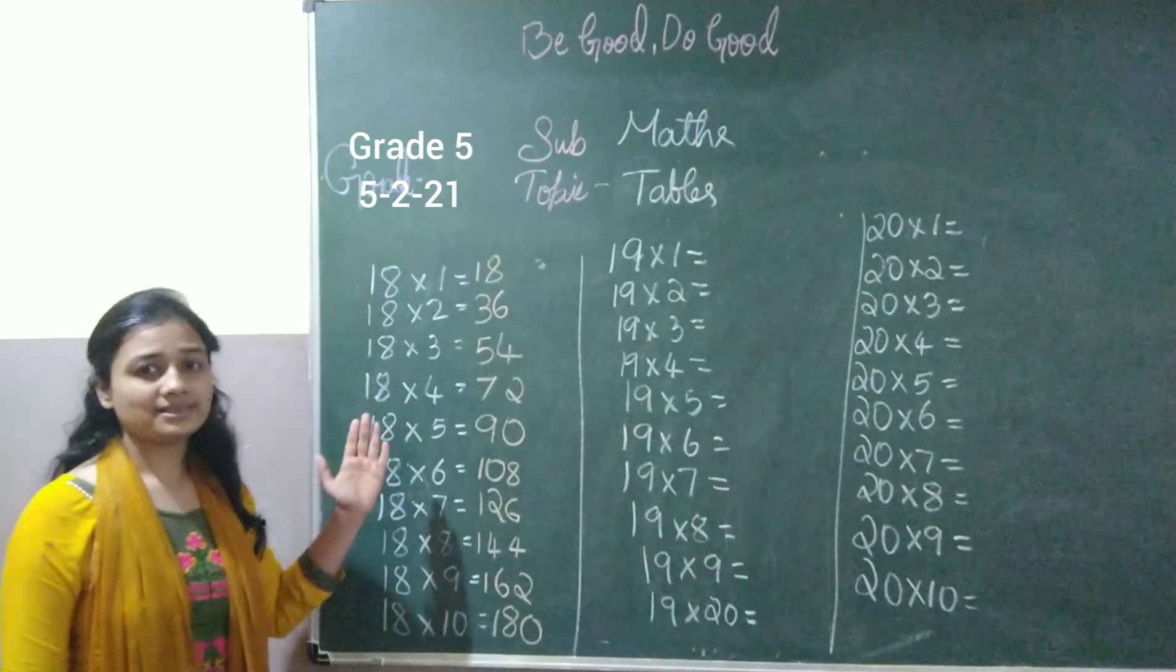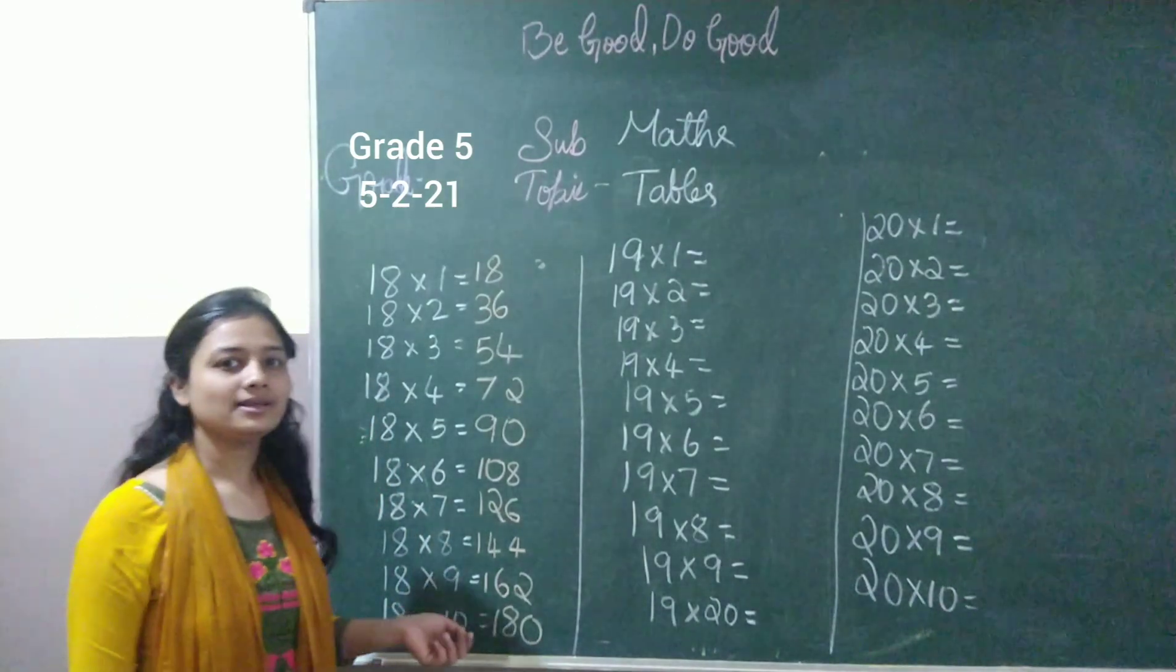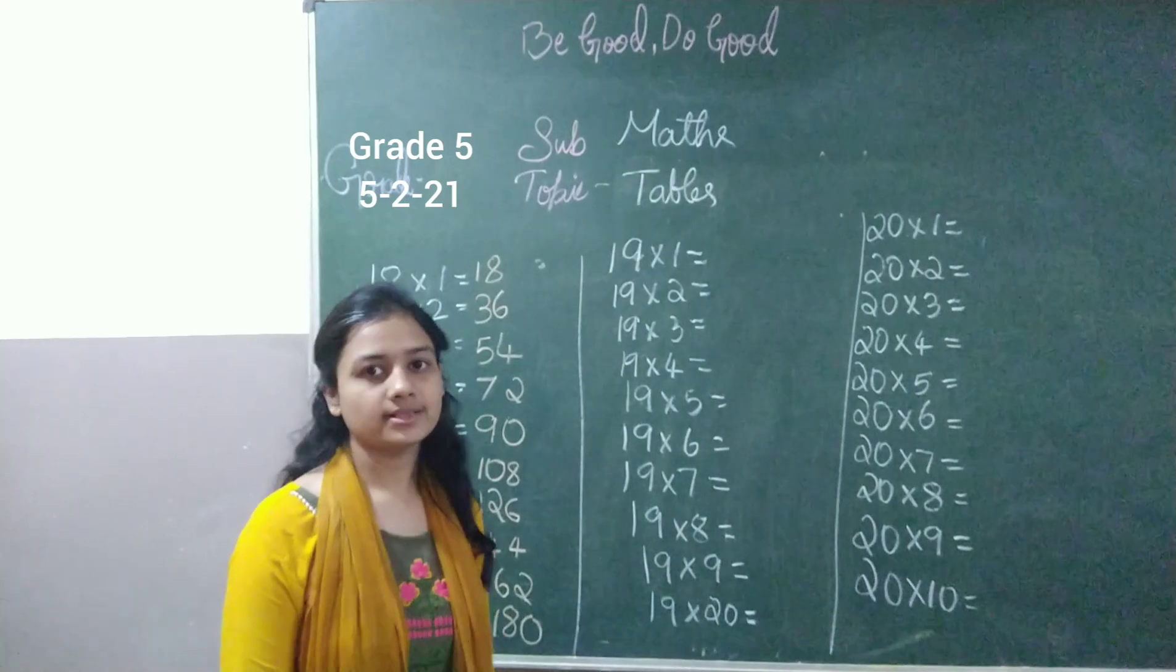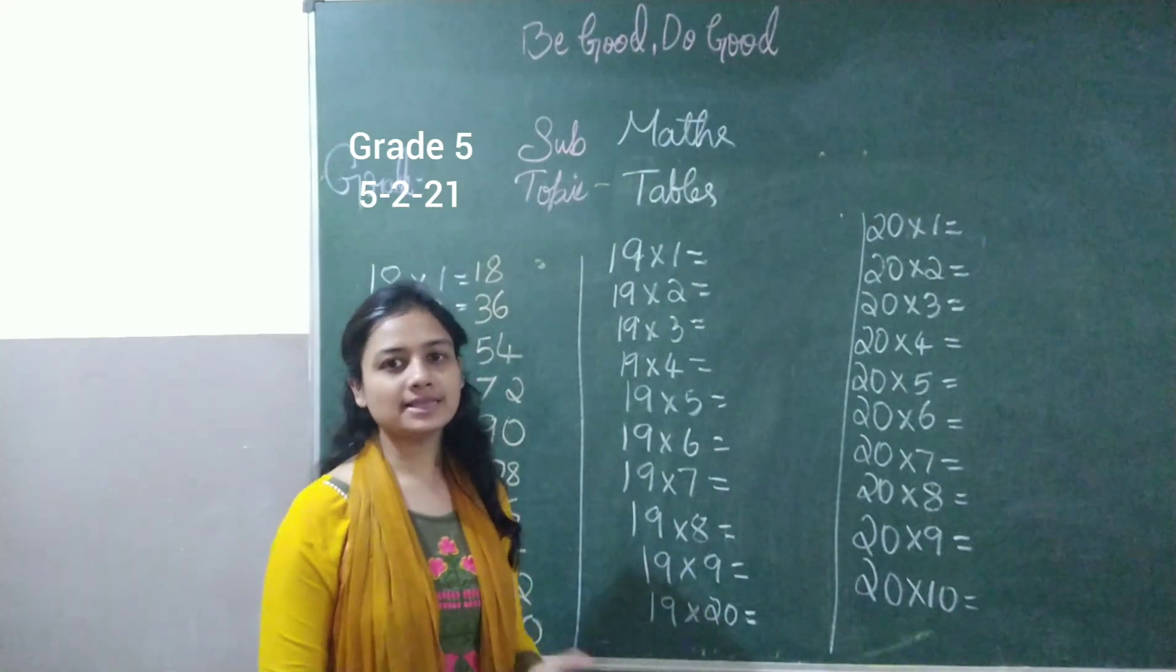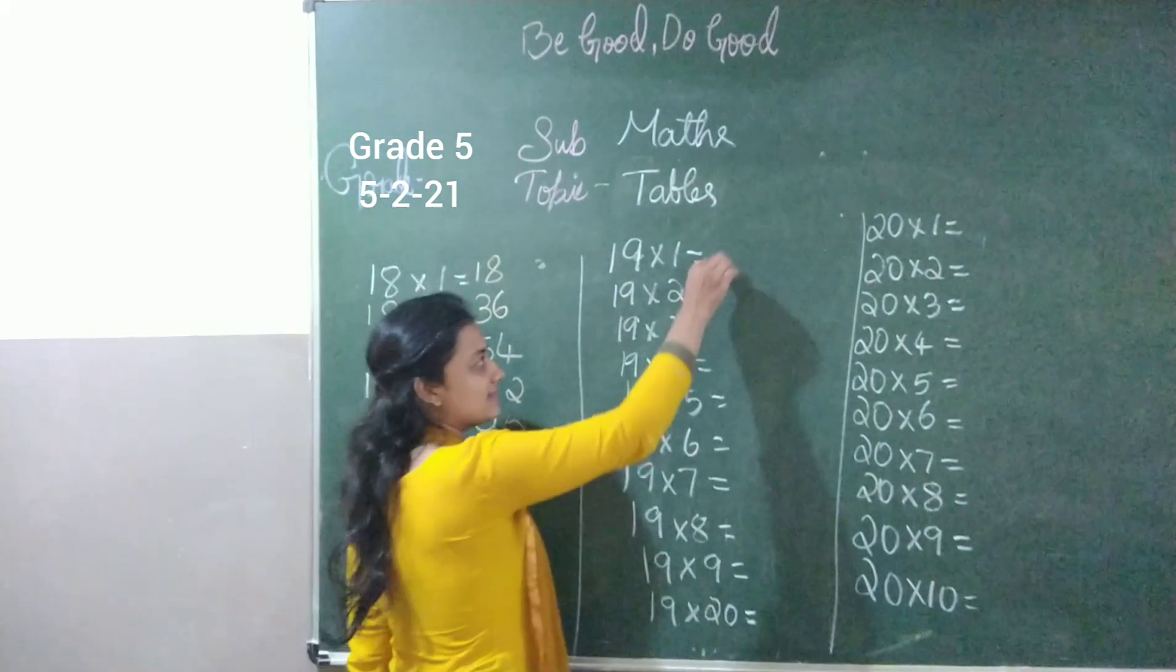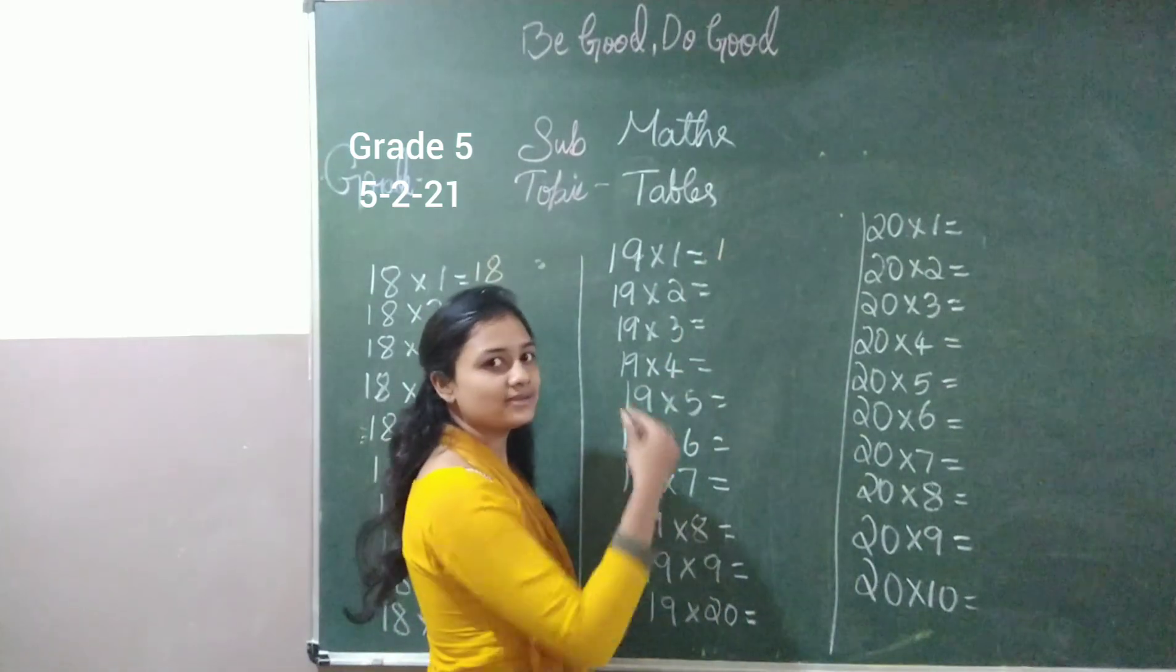I hope. Now let's go for 19 tables. Even here we will be using the skip counting. So let's start skip counting of 2. Start with 1.